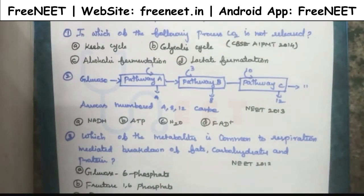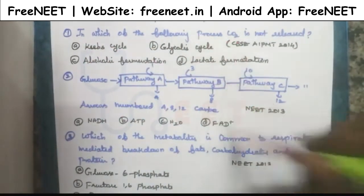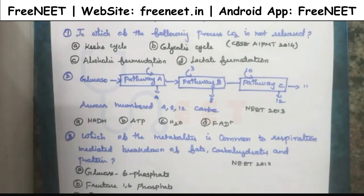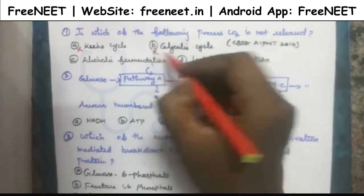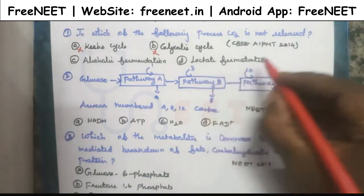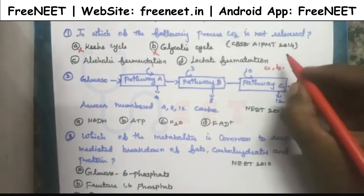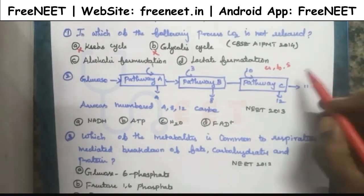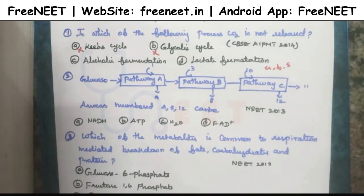The first question is: in which of the following processes is carbon dioxide NOT released? We know that in fermentation, CO2 may or may not be released. We neglect options A and B. Option C is alcoholic fermentation — during alcoholic fermentation, CO2 and water are released. But in lactate fermentation, CO2 is not released, because sugars like glucose, fructose, and sucrose do not release CO2 during lactate fermentation. This is a key point.